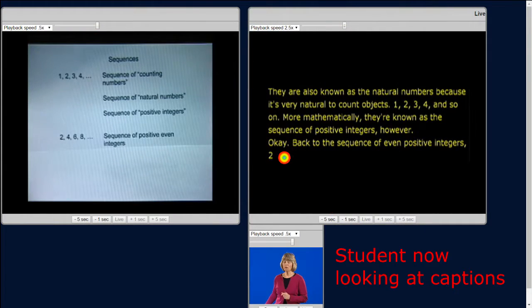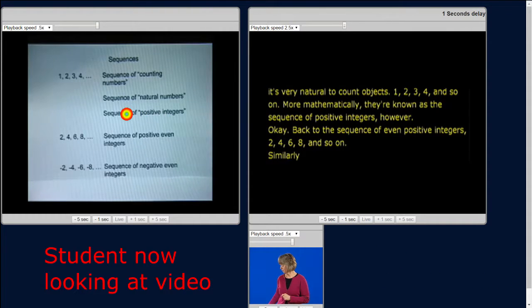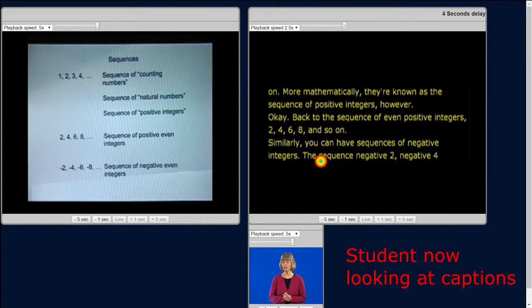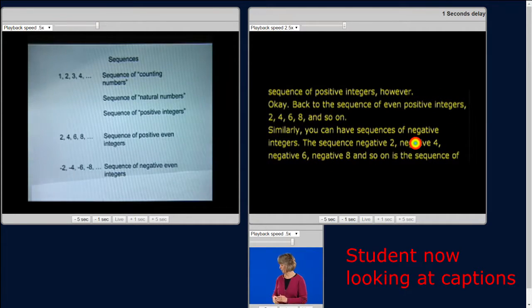and so on. Similarly, you can have sequences of negative integers. The sequence negative 2, negative 4, negative 6, negative 8, and so on is the sequence of negative even integers. And that's the one we're going to investigate a little more thoroughly today.